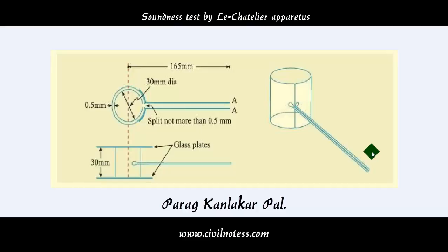Remove the mold from the water, allow it to cool, and measure the distance between the indicator points again. The difference between these two measurements represents the expansion of cement.